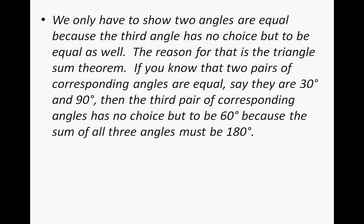Your answer might have hopefully sounded like this. We only have to show two angles because the third angle has no choice but to be equal as well. That is the triangle sum theorem. If you know that two pairs of corresponding angles are equal, say they are 30 degrees and 90 degrees, then the third pair of corresponding angles has no choice but to be 60 degrees because the sum of all three angles must be 180 degrees.